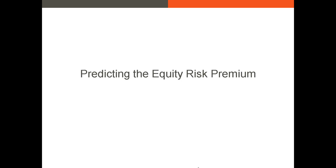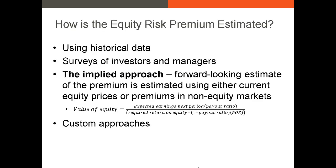I want to switch topics and talk about how investors estimate the equity risk premium — or market risk premium — which is the amount by which the market index will outperform the risk-free asset. The most common strategies are: first, you could calculate the historical equity risk premium. The average market risk premium in the U.S. has been about 6% to 6.5% over the last 100 years, so many investors use 6% as a default.